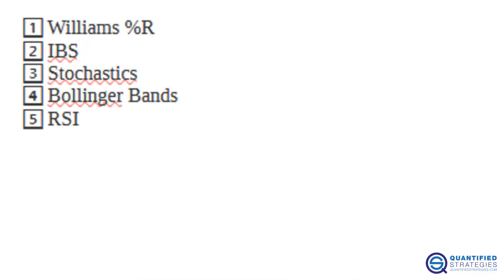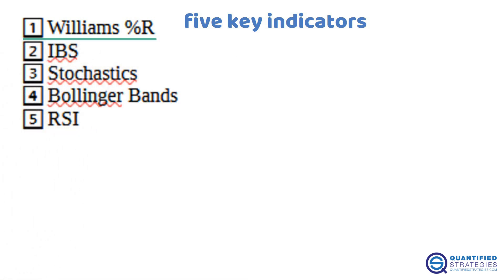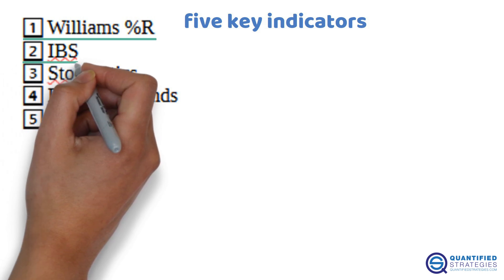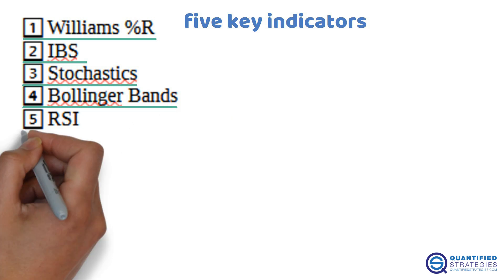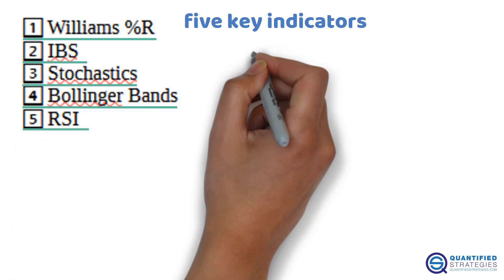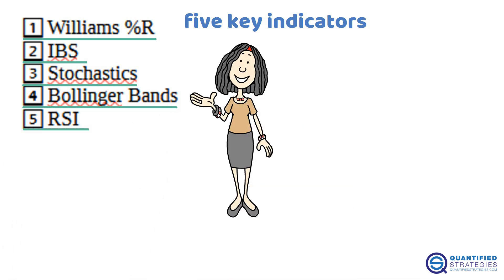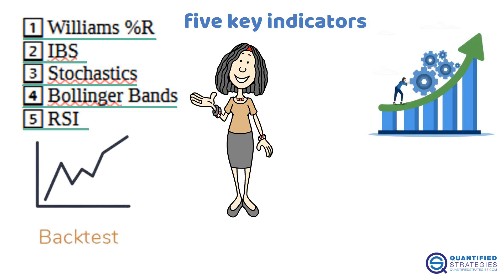Here are five key indicators every swing trader should have on their radar: Relative Strength Index (RSI), Internal Bar Strength (IBS), Stochastics, Bollinger Bands, and Williams %R. We'll walk through how each works, show you backtests, and reveal which one came out on top in terms of performance.